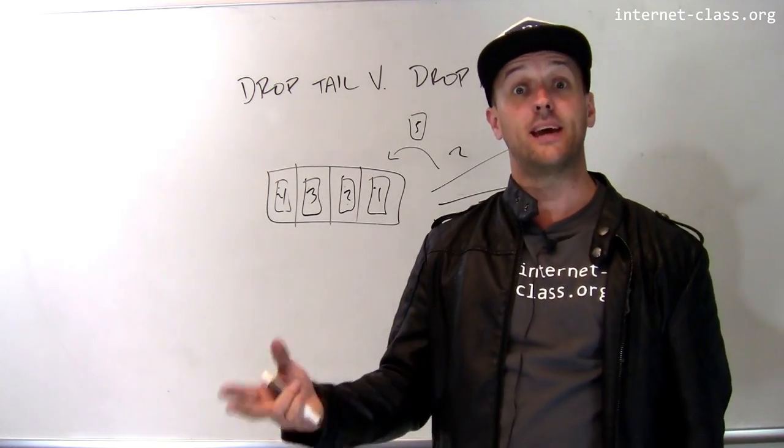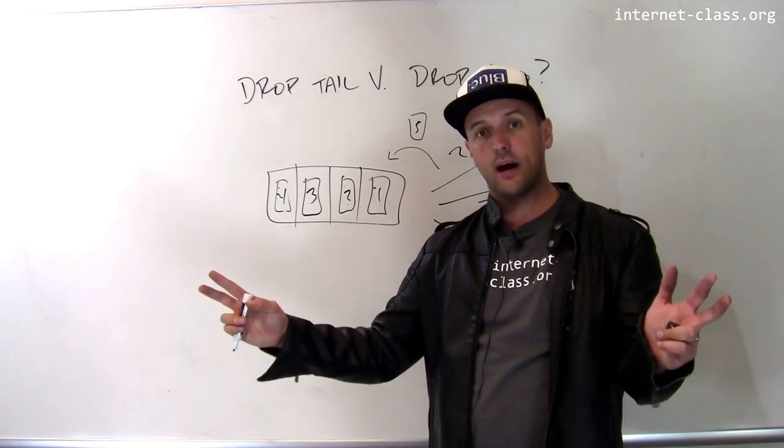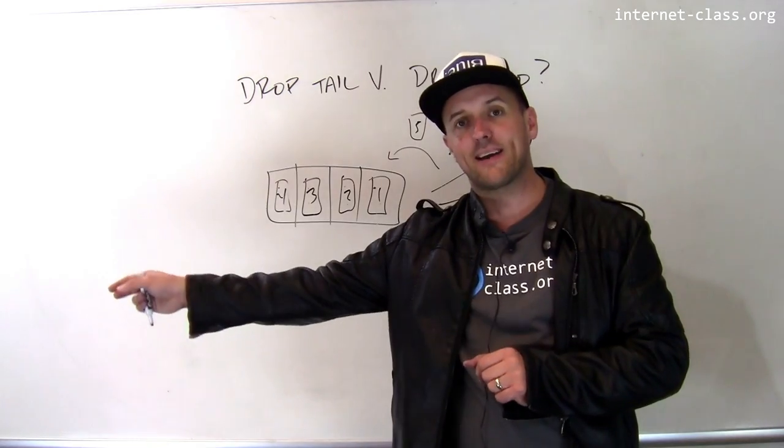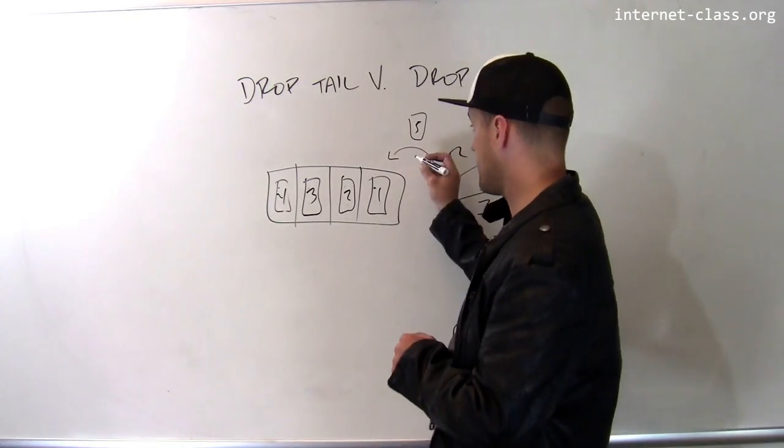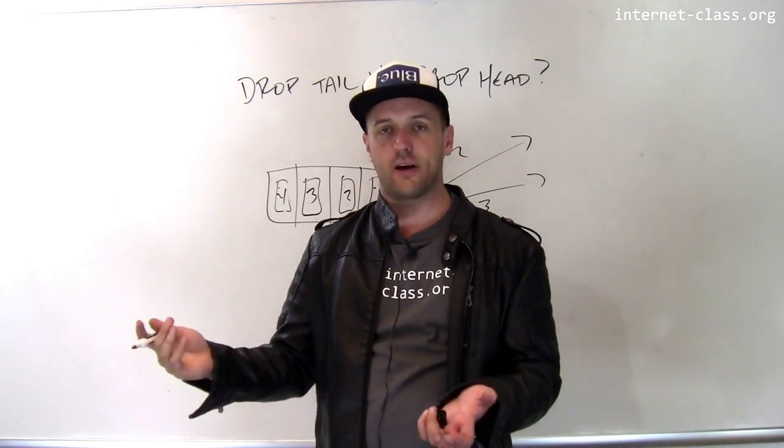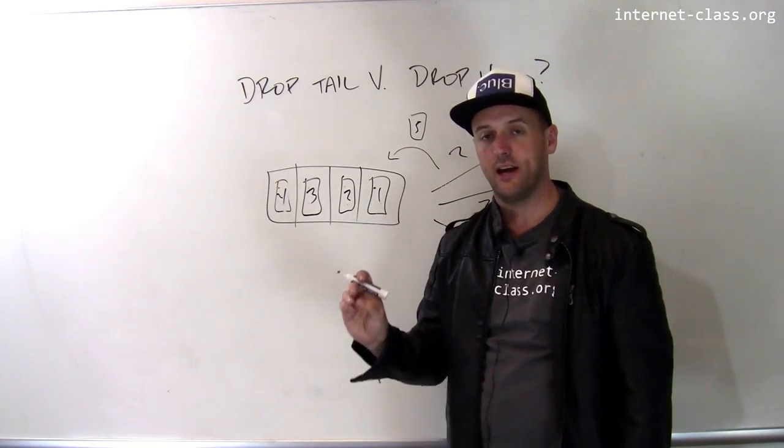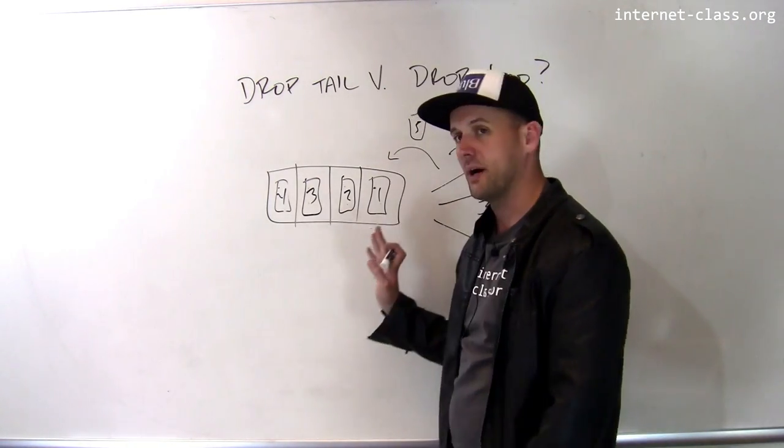So that's a policy that's called drop tail. It means when I run out of space, I drop packets at the end of the queue. So this is the last packet in line, there's no space for it, so I would drop it and I would just continue to try to route packets from the front of my queue.